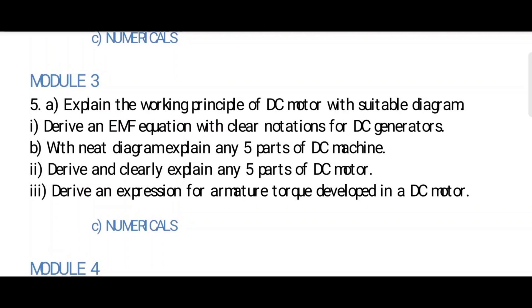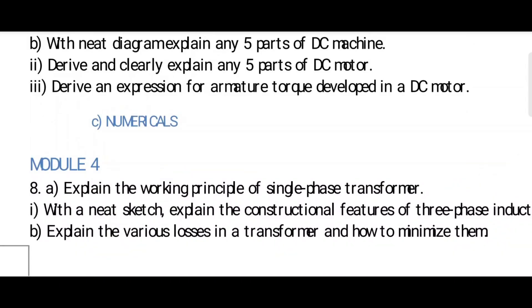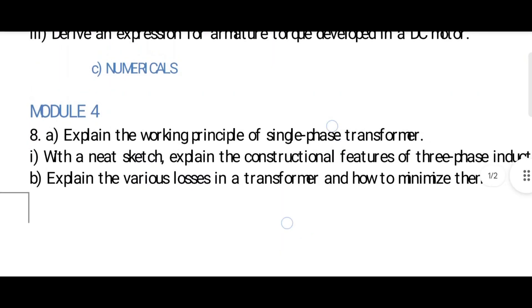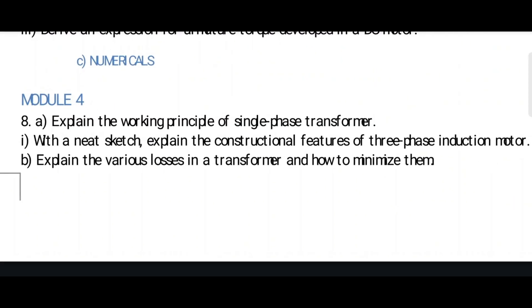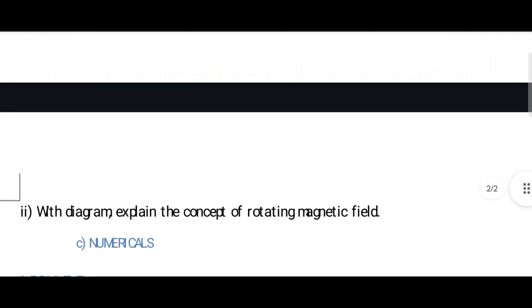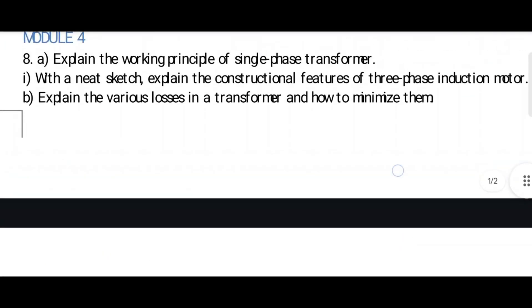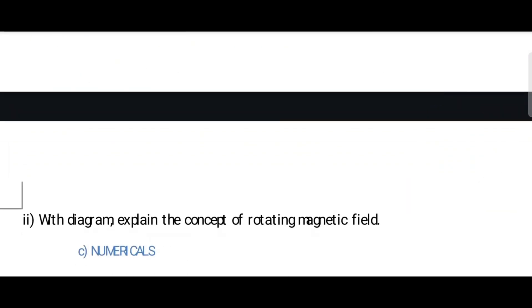In Module 4: explain the working principles of a single phase transformer — more important. I divided it into four questions: part A — 2 questions, part B — 2 questions. Second one: with a neat sketch, explain the construction features of a three phase induction motor — also more important. Part B: explain the losses in a transformer and how to minimize them. You know transformers from 12th standard — they're quite easy. With the diagram, explain the concept of rotating magnetic field — everything you studied in physics. Module 4 is more easy, and Module 5 is also more easy. Read these four questions — it's more than enough to get full marks in Module 4.